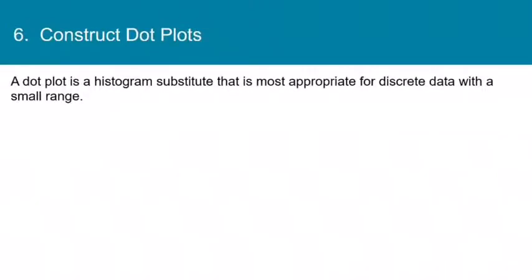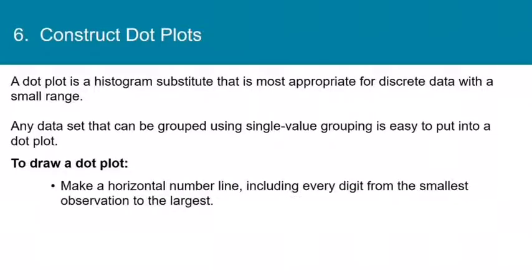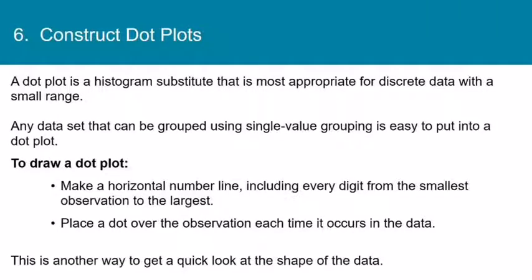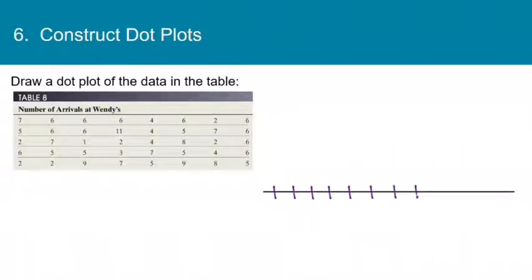The last type of graph we'll look at in this section is called the dot plot. A dot plot is another histogram substitute most appropriate for discrete data with a small range — any data that can be grouped using single-value grouping is easy to put in a dot plot. To draw one, make a horizontal number line including every digit from the smallest to the largest observation, then place a dot over the observation each time it occurs. It's just another way to get a quick look at the shape of the data.